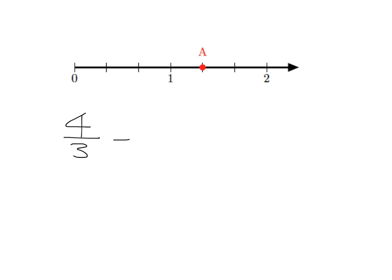Now you should remember from last year — that's an improper fraction. And we can always turn an improper fraction into a mixed number. Let's remind ourselves how we do that. We say three divides into four — it goes one time with one remaining. So we've got one and one-third. And we can see how that makes sense on the number line. There's the one, and there's the one-third. So four-thirds is the same as one and one-third.